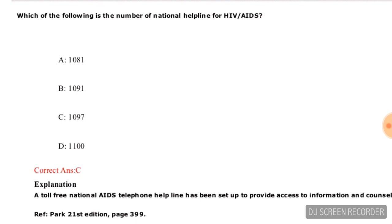Which of the following is the national helpline number for HIV/AIDS? Options are 1081, 1091, 1097, or a double-digit option. The correct answer is 1097 — the national helpline number for HIV/AIDS is 1097, so option C is correct.